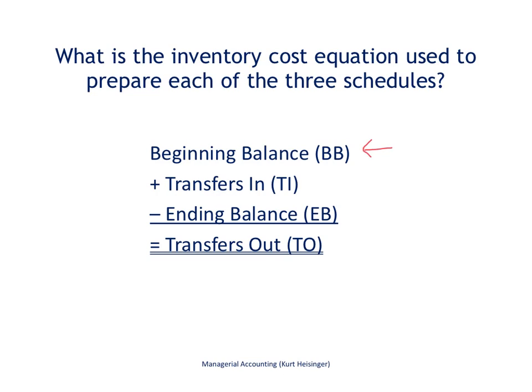We are going to look at the beginning balance — let's say for raw materials inventory. We add to that any transfers in, which in a raw materials inventory situation would be any purchases of raw materials. Then we subtract the ending balance in raw materials, and that gives us what was transferred out into work in process inventory. We will go through the same process with work in process and finished goods inventory.